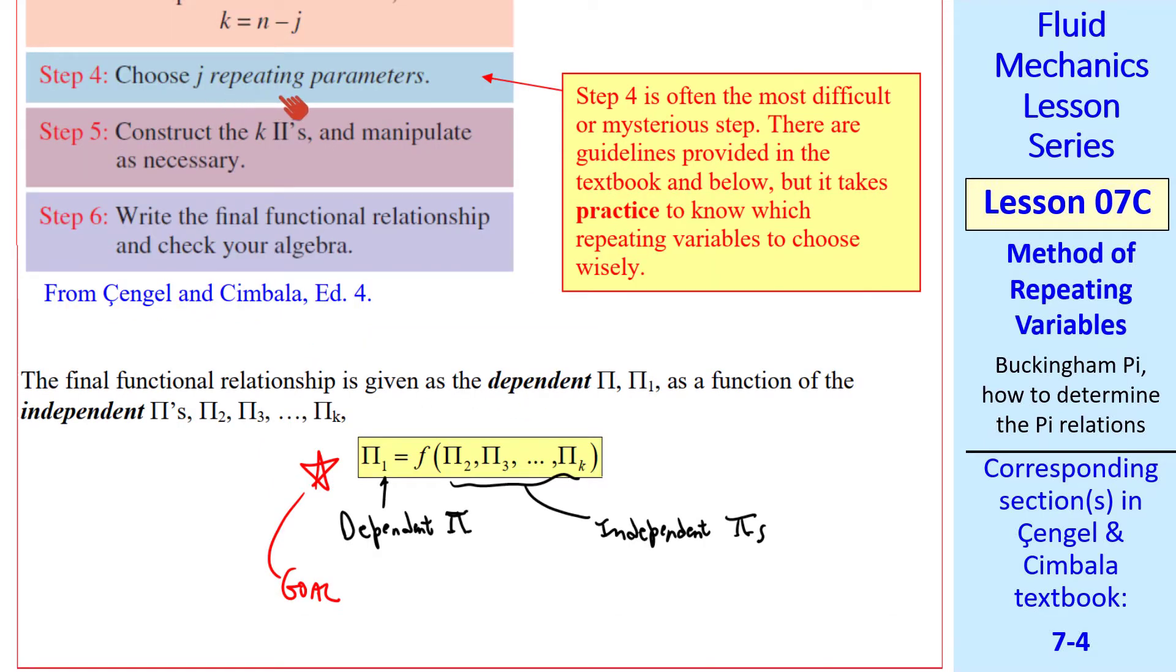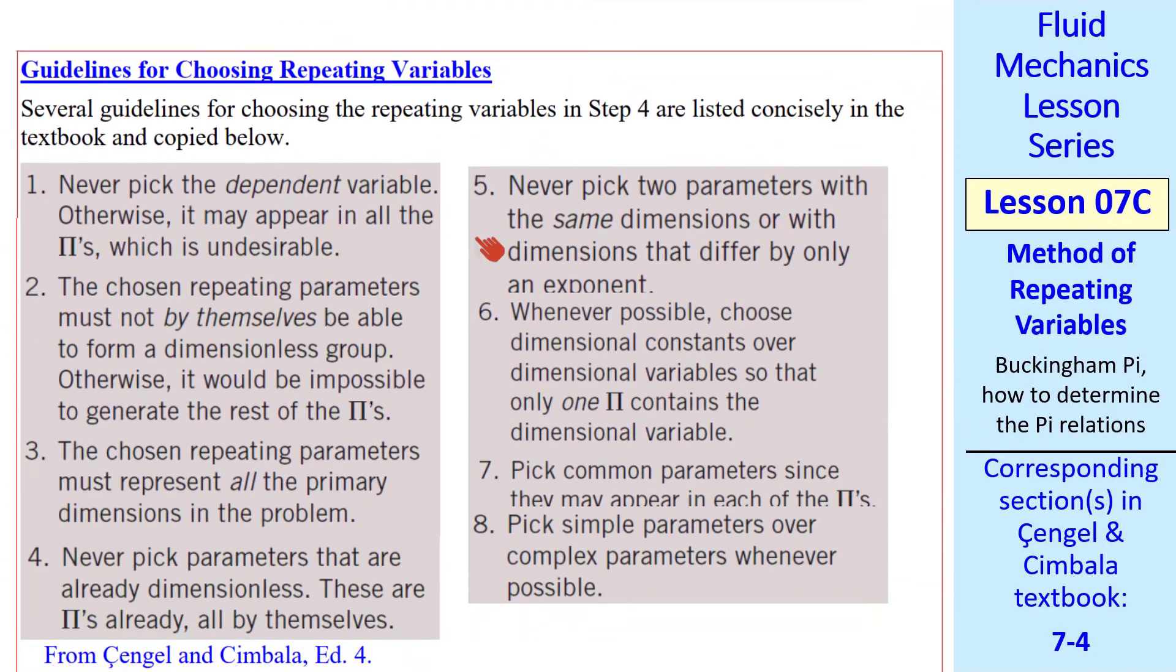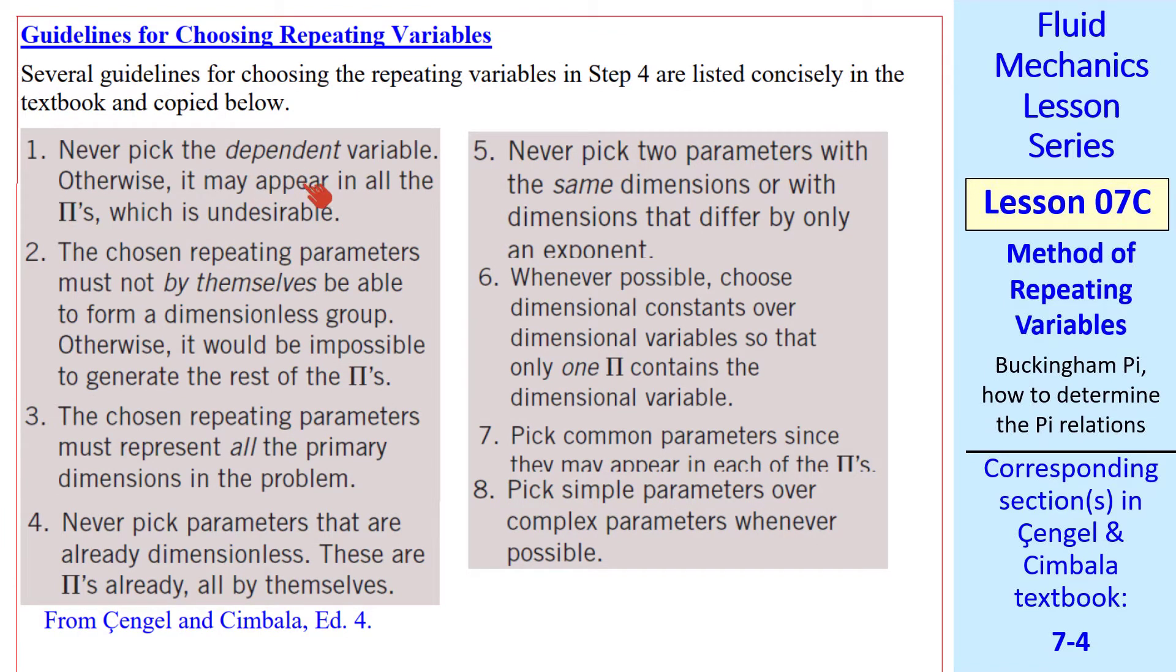I mentioned choosing j repeating parameters. I'll show you some guidelines for choosing these repeating parameters or variables. We never pick the dependent variable. That would defeat the purpose because that variable would then appear potentially in all the other pis. We choose repeating parameters that must not, by themselves, form a dimensionless group. Otherwise it would be impossible to generate the other pis. Here's an important one: the chosen repeating parameters must represent all the primary dimensions in the problem. Never pick parameters that are already dimensionless. They're already pis by themselves. For example, if you have an angle. An angle in radians is dimensionless.